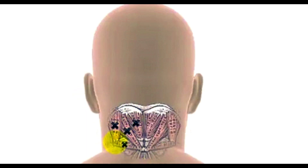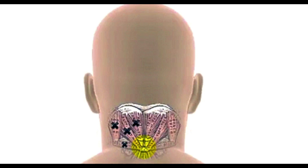The obliquus capitis inferior muscle runs from the posterior spine of C2 (its origin) and inserts into the lateral process of C1. This muscle is a rotator — when it contracts it rotates your head, acting across the C1-C2 joint. The C1-C2 joint is a unique joint in the whole spine, and it makes up 45% of the rotation of your head. So this muscle is actually a really important rotatory muscle.